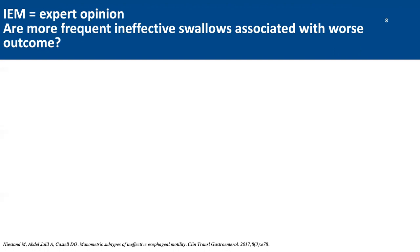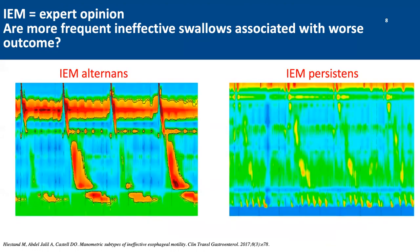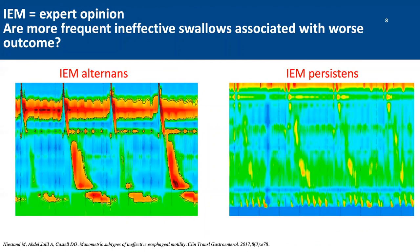For example, are more frequent ineffective swallows associated with worse clinical outcome? Hysten et al. defined the term IEM alternance, where normal swallows occur between ineffective or weak swallows, and IEM persistence, where there are no normal peristaltic contractions. Patients with IEM persistence were found to have a weaker lower esophageal sphincter, more advanced reflux disease, and somewhat worse response to PPI. This may prove that IEM persistence is a more advanced manifestation of IEM than IEM alternance.